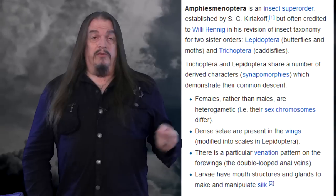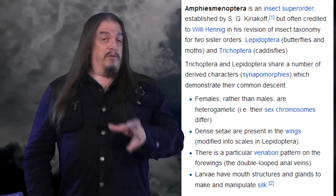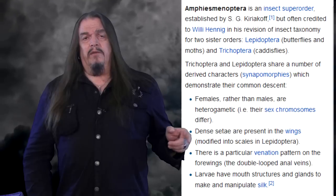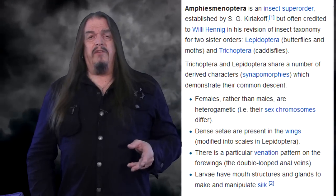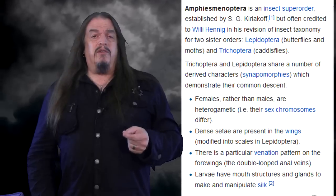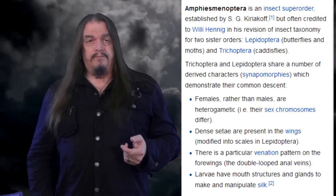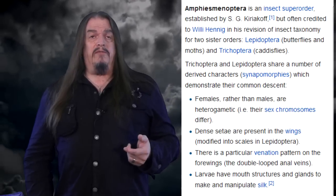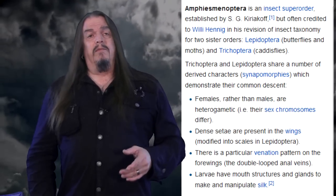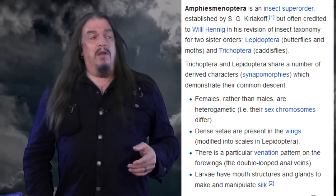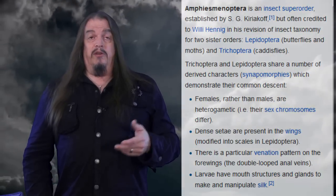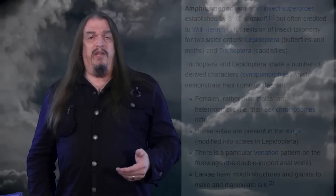Dense setae are present in their wings, further modified into scales in Lepidoptera — you can see where that came from. There is also a particular venation pattern in the forewings — the double-looped anal veins — and the larvae have mouth structures and glands to make and manipulate silk. These are traits that butterflies, moths, and caddisflies all have in common, evidently inherited from a shared evolutionary origin. We're not interested in superficial surface structures because classifying things by outward appearances is inaccurate and lazy. We look at core commonalities instead.